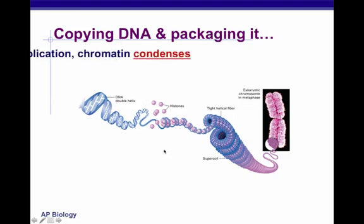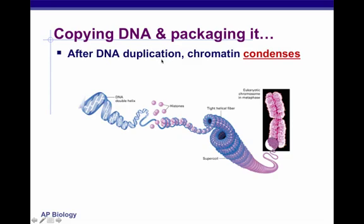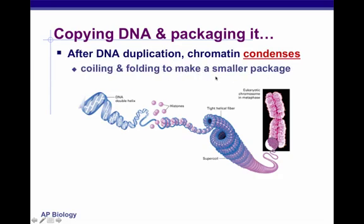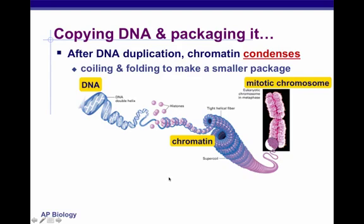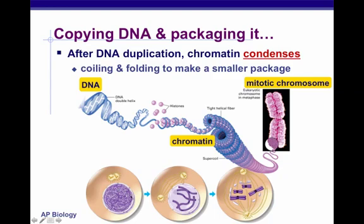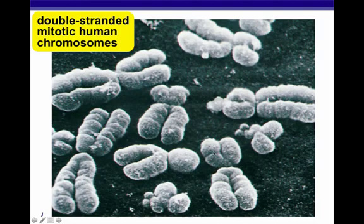After DNA duplication in the S phase of interphase, the chromatin condenses — coiling and folding to make a smaller package: the chromosome. Here's the DNA, here's the chromatin, and then it condenses all the way into the mitotic chromosome. The chromatin is like spaghetti of DNA not yet organized, then it becomes organized into chromosomes. Here are the double-stranded mitotic human chromosomes — the classic form students typically think of when they think of chromosomes.